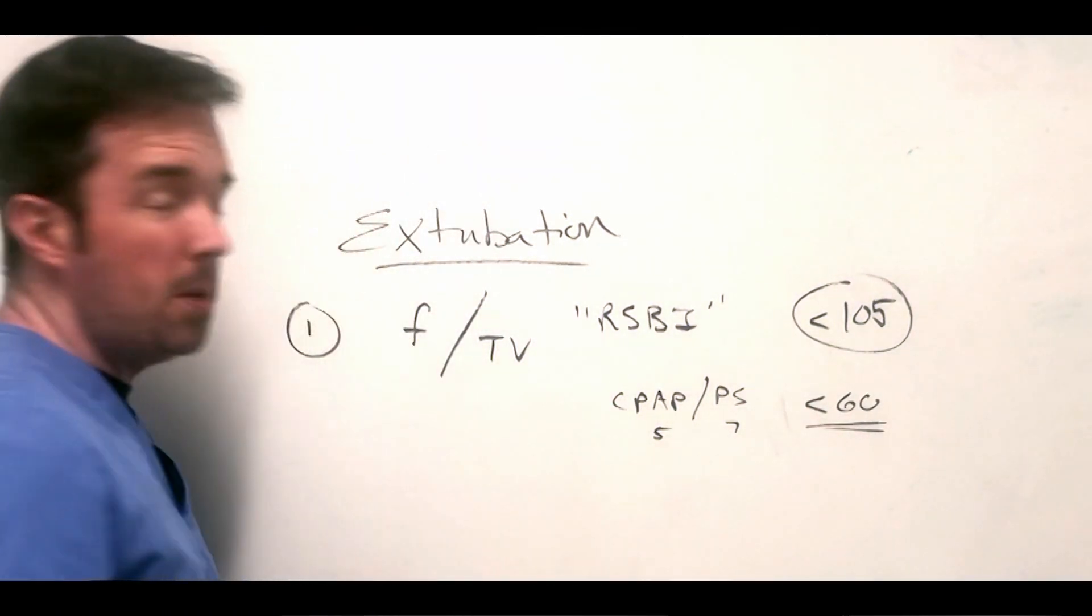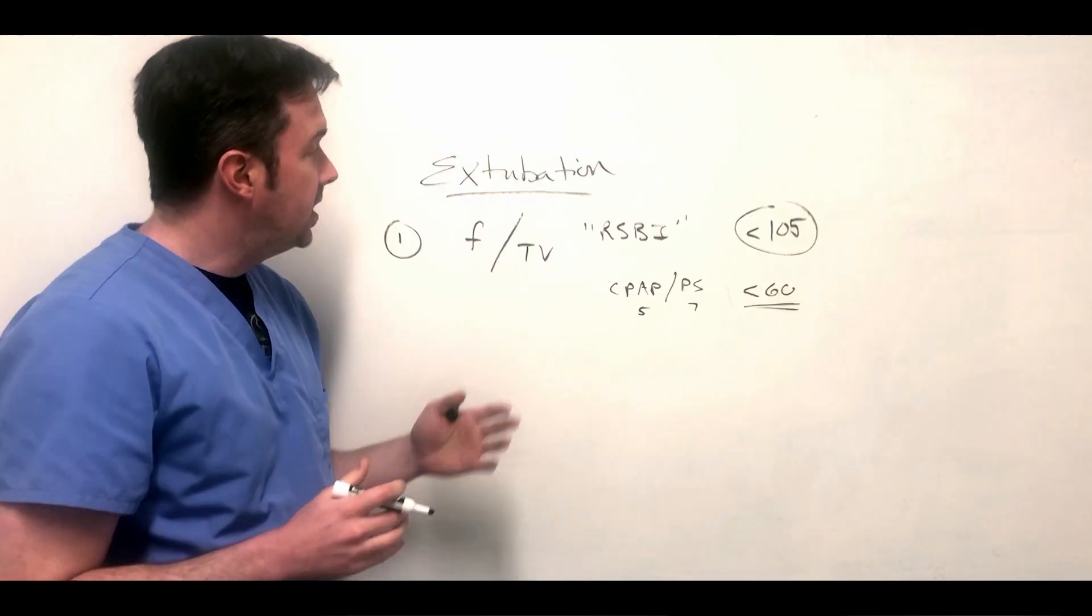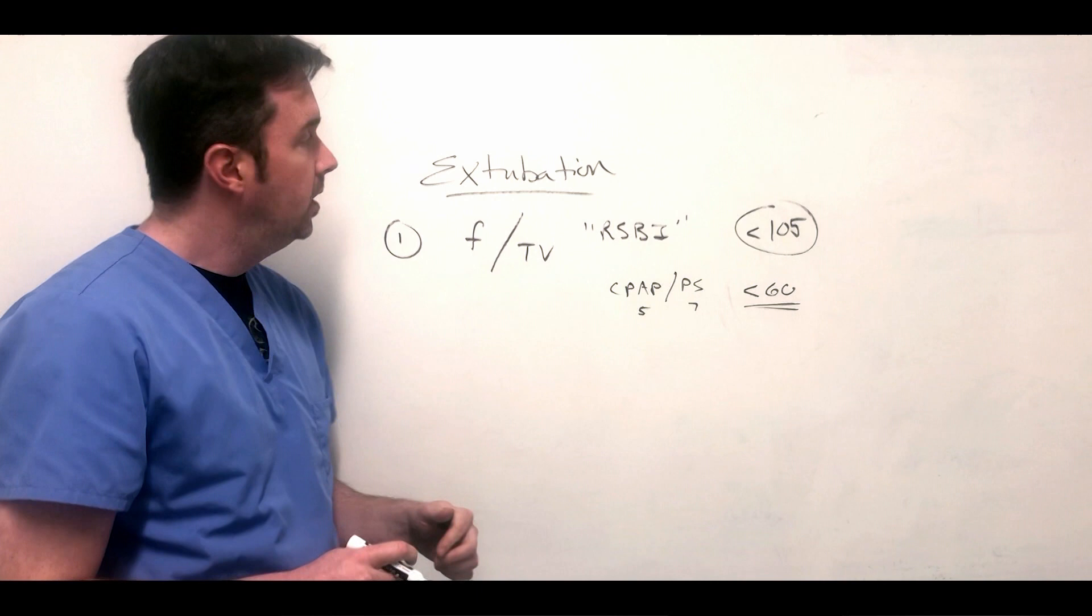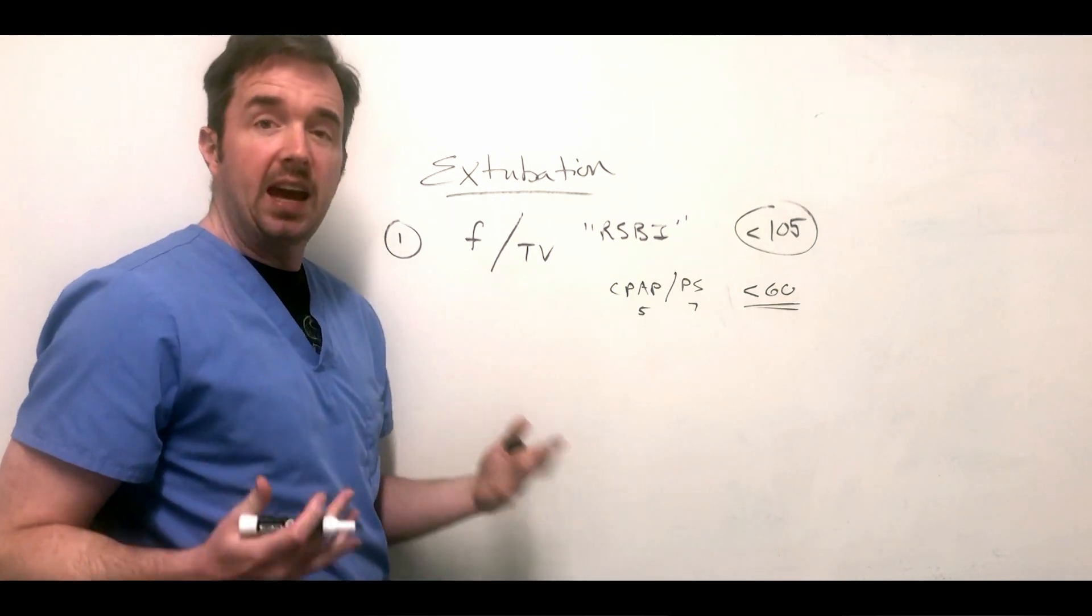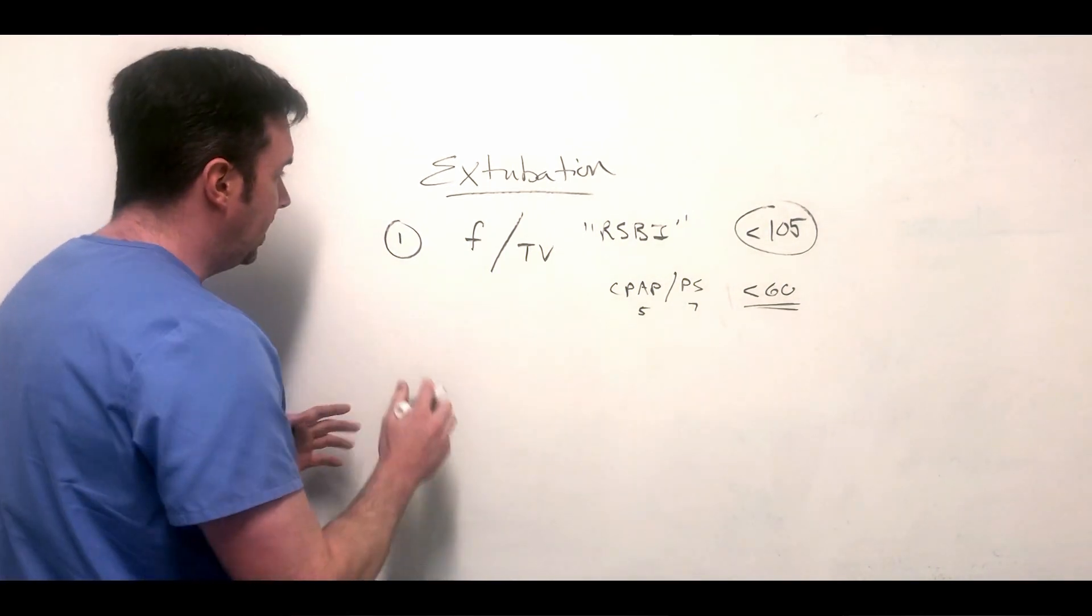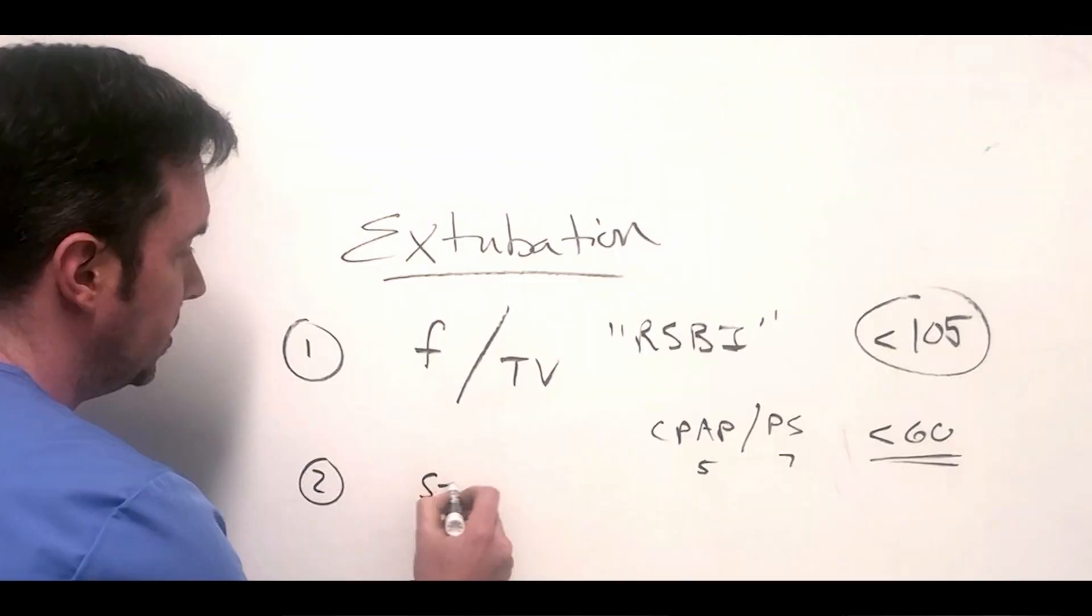The lower the RSBI, the better. Typically in patients on CPAP pressure support 5 over 7, if you're seeing that their RSBI is less than 60, in my opinion that's usually a pretty good sign that the patient is taking big enough breaths at a low enough frequency, telling you that their respiratory mechanics are ready to be extubated. Remember, the RSBI is just one of the five.